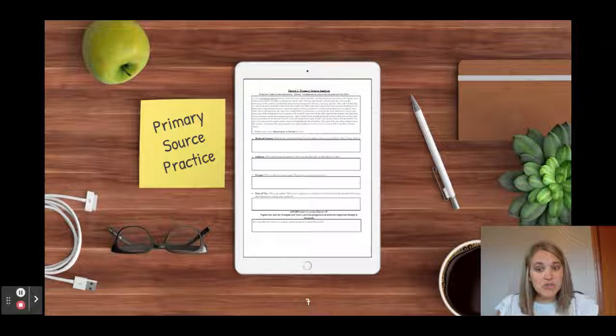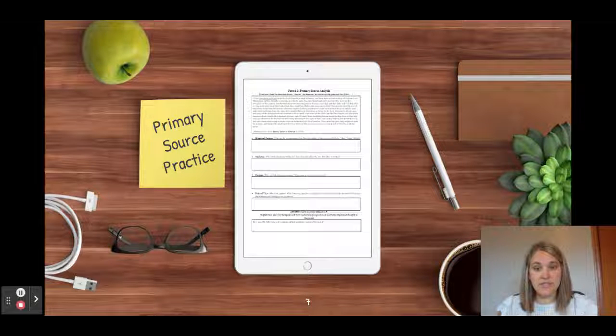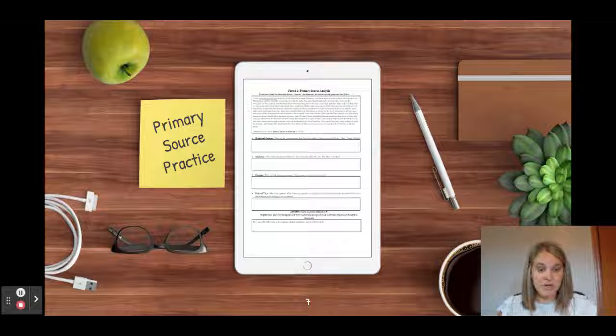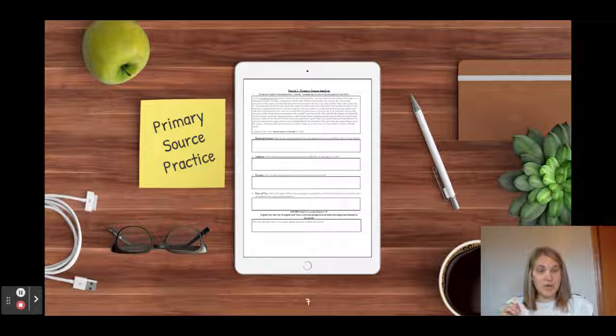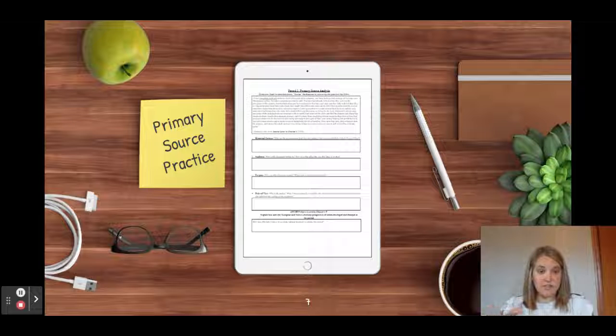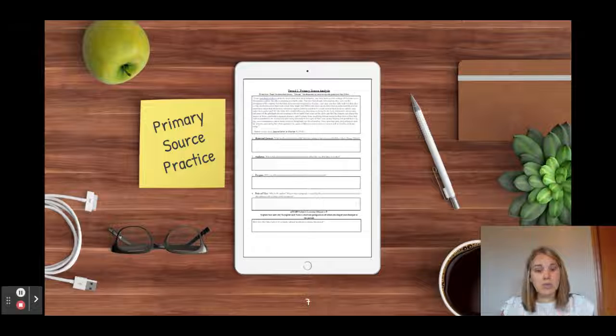We move on to the primary source practice, and this primary source is a letter from Hernan Cortez. This is a really great way to start looking at point of view. You want to think about who is Hernan Cortez? He was a Spanish person, not a Native American. Who was he writing to?